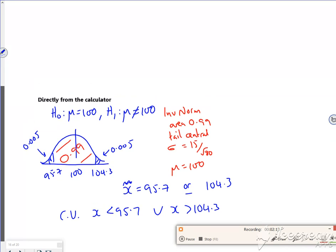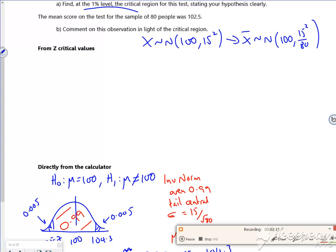In terms of the zeds, I do the same idea, except it's a 0 there or 0.99. So I've still got my inverse normal. My area is still 0.99, but sigma is, well, mu is 0.